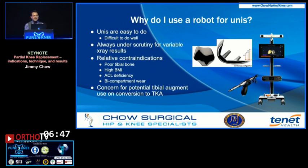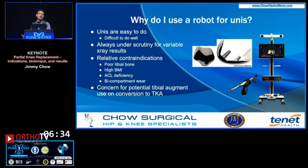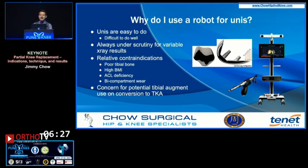Unis are easy to do, but they're difficult to do really well. Partial knee replacements classically show sloppier or more variable x-ray results. There are relative contraindications like high BMI, tibial bone issues, ACL deficiency, and bicompartmental wear that can actually be solved with what's known as a third generation tibial sparing uni.